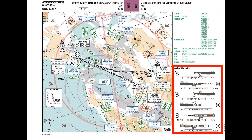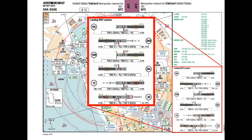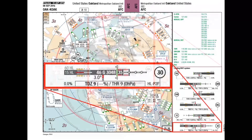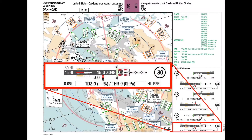A presentation of the landing runway system is provided below the communication information. As an example, let's have a closer look at the layout of runway 3-0. The landing runway system indicates landing distance available, slope, threshold and touchdown zone elevation, and available approach and runway lights.